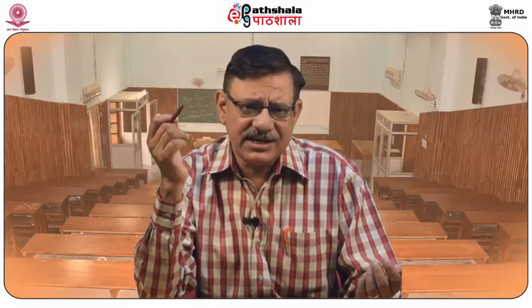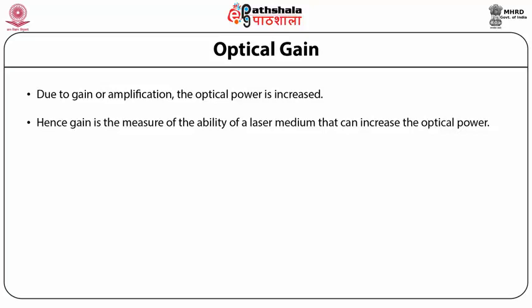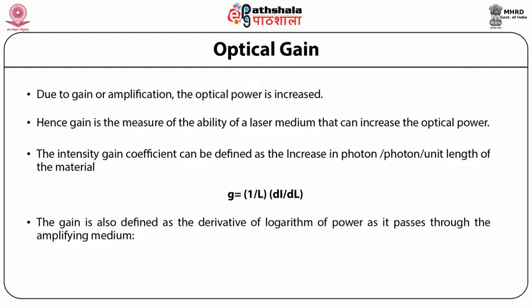If γ > αl, losses exceed the gain, and the standing waves inside the cavity die out. To sustain standing waves, the gain must be high enough to compensate the losses. Due to gain or amplification, the optical power is increased, so gain is a measure of the ability of a laser medium to increase optical power. The intensity gain coefficient is defined as the increase in photons per photon per unit length of material: g = (1/I)(dI/dl). Gain is also defined as the derivative of the logarithm of power: g = d/dz [ln P] = (dP/dz) / P.